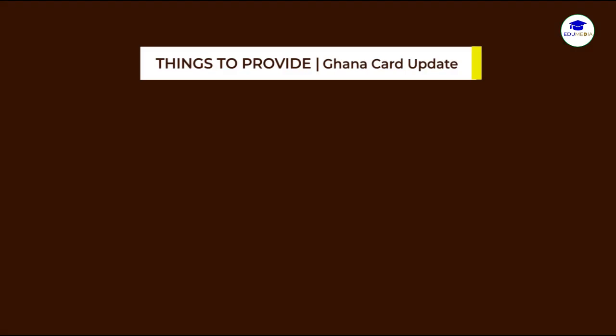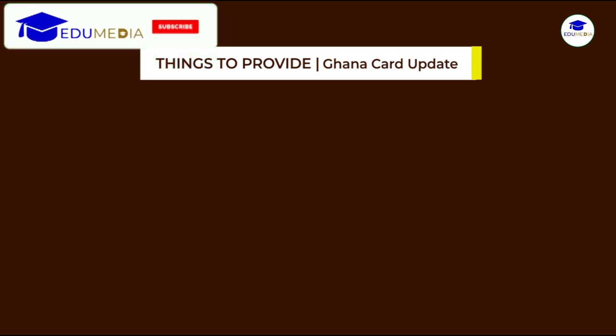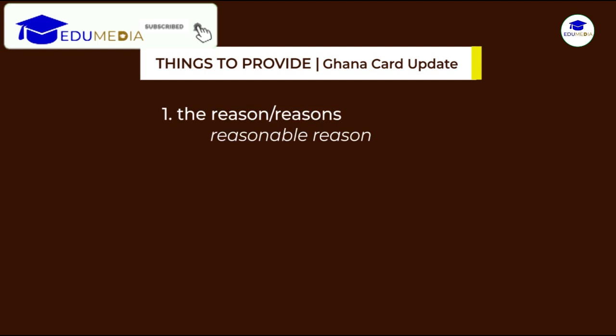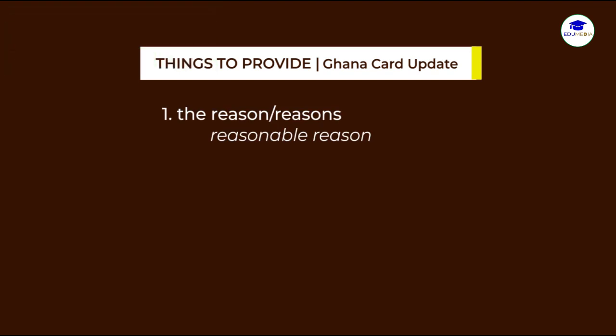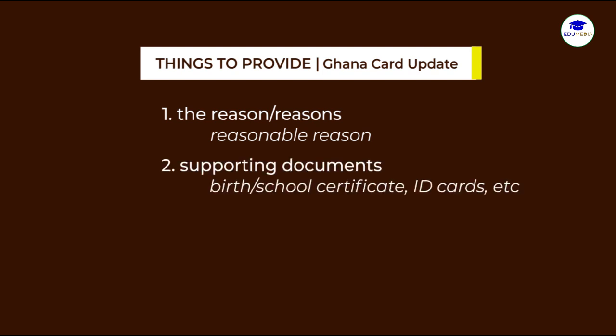There are three things you need to provide when going for an update or change of name. The first thing you will need is the reason for the change — are you changing the name on your Ghana Card because you are married, or because your parents said you changed it? The reason should be genuine and tangible. The second thing you also need is a document supporting your reason. If you are changing your name because you've been made a chief, then you need to provide a document affirming that.